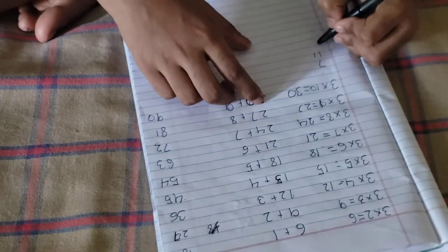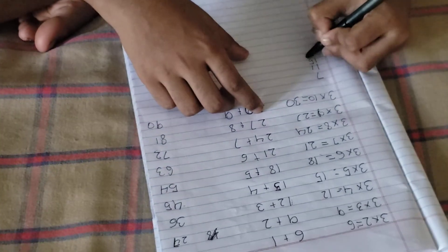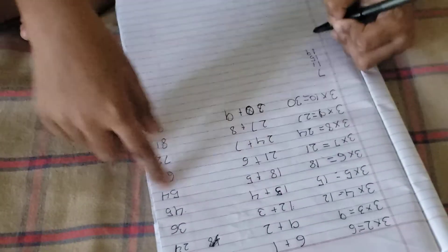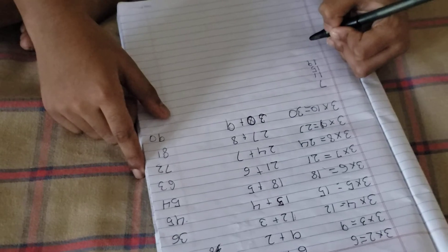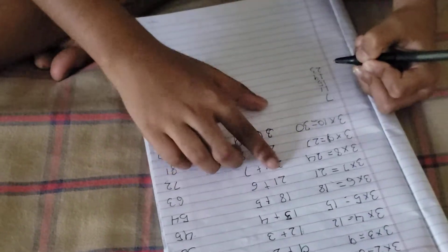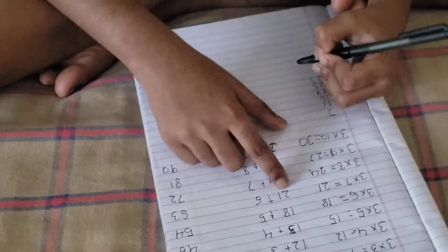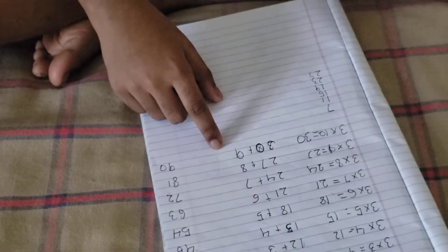12 plus 3 is 15. 15 plus 4, 19. 18 plus 5, 23. 21 plus 6, 27. 24 plus 7, 31.